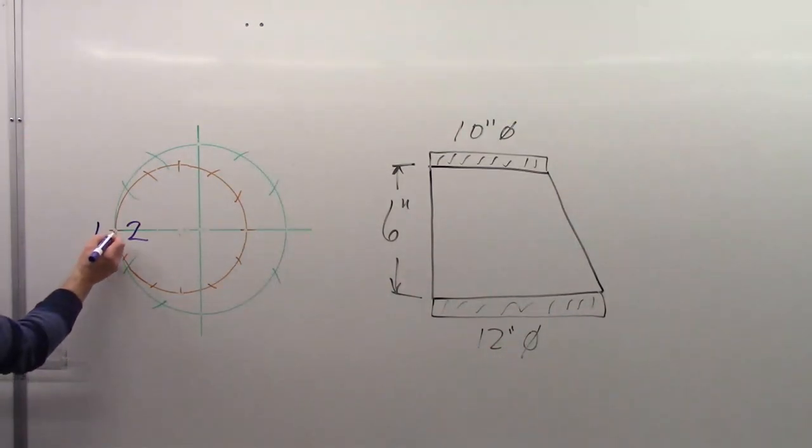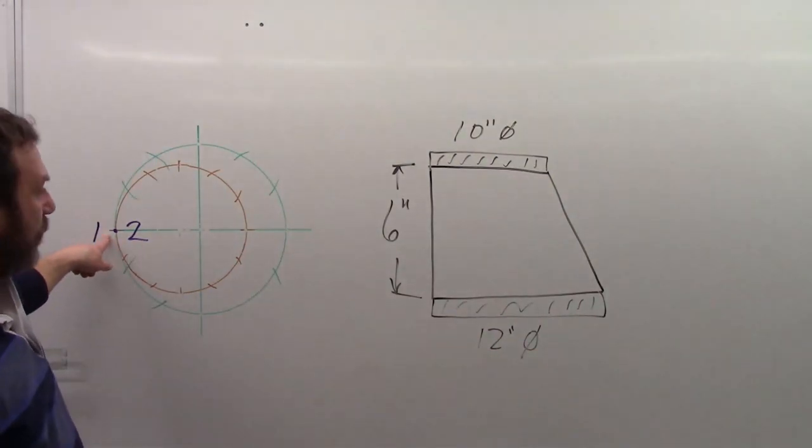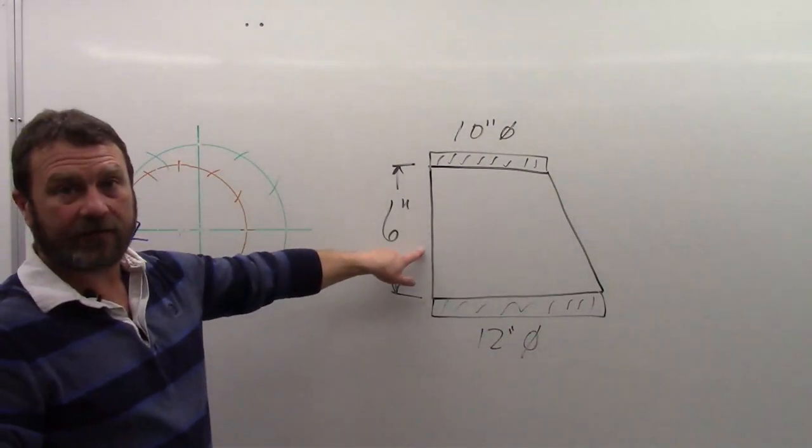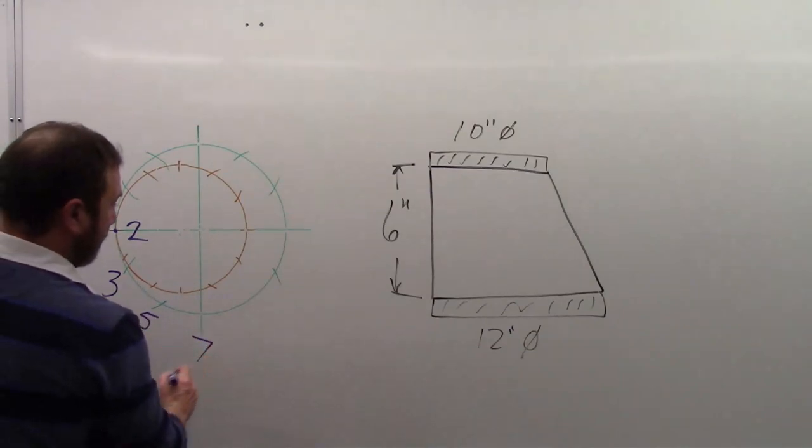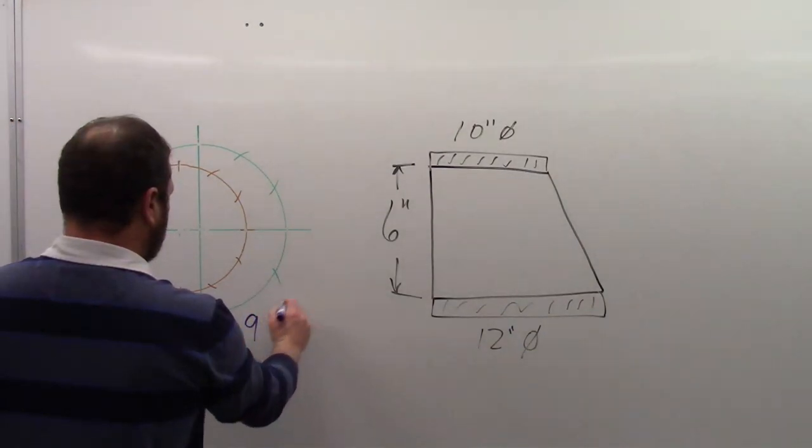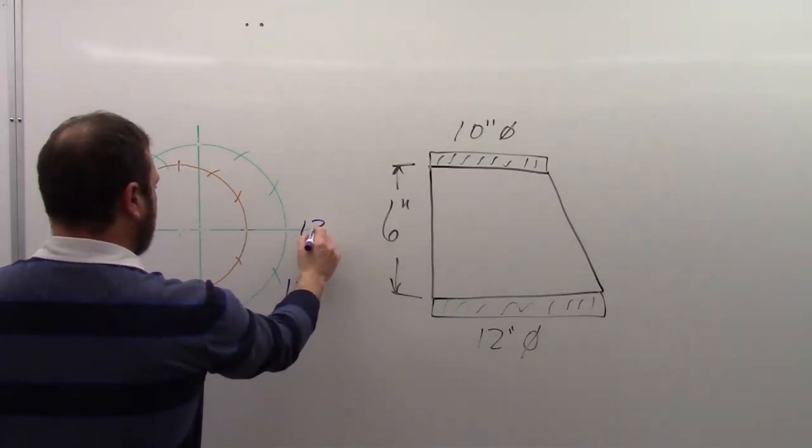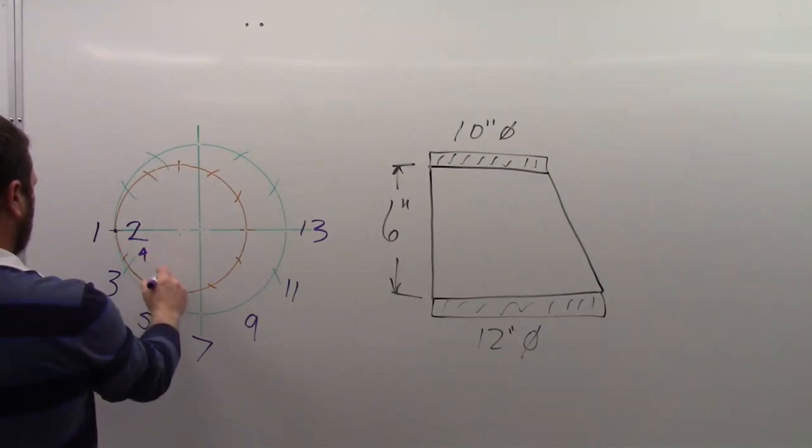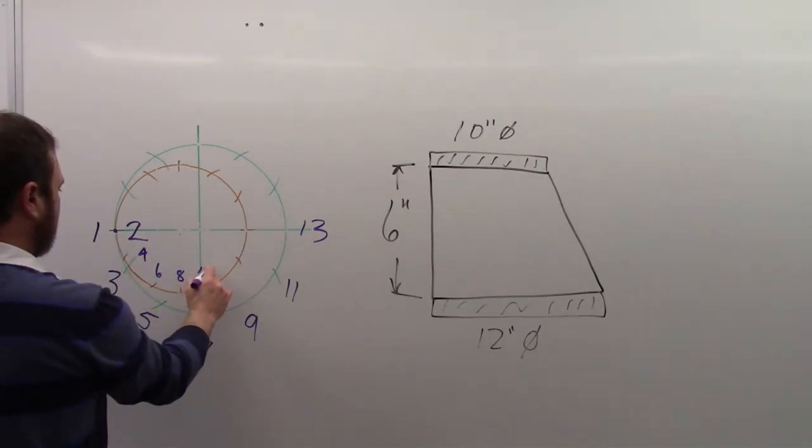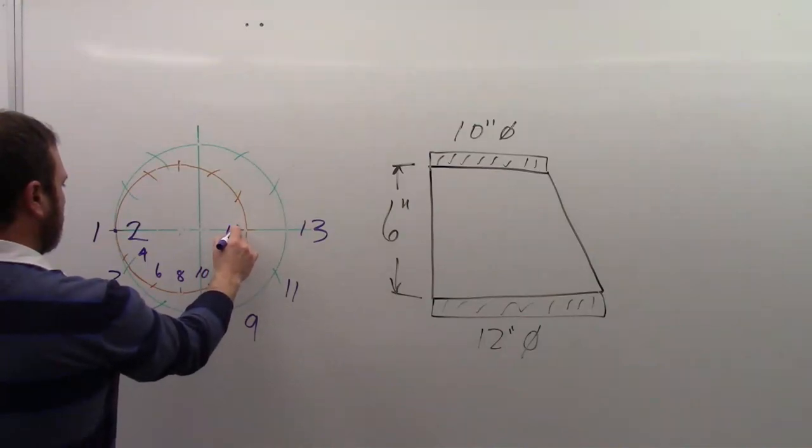Now, again, we have a dot here, right, where it lines up exact. And a dot in the plan view equals true length in the elevation view. On the large end this time, and my small is odd numbers on the outside. So, 1, 3, 5, 7, 9, 11, 13, and 2, 4, 6, 8, 10, 12, 14.